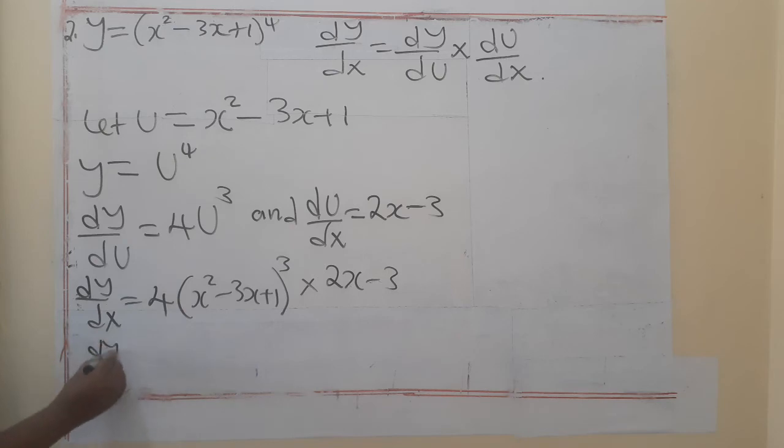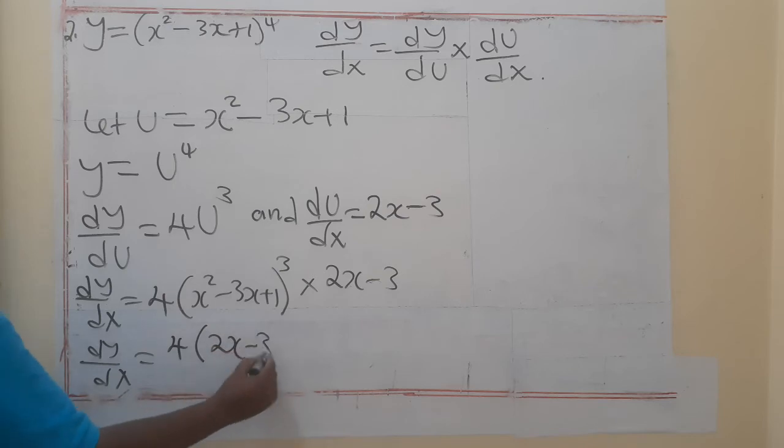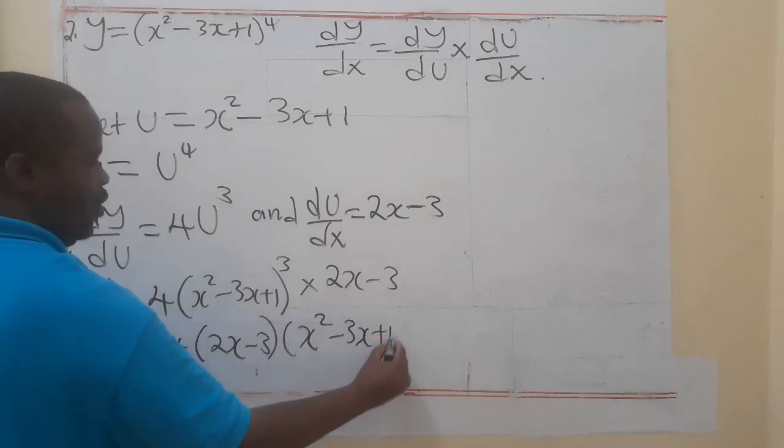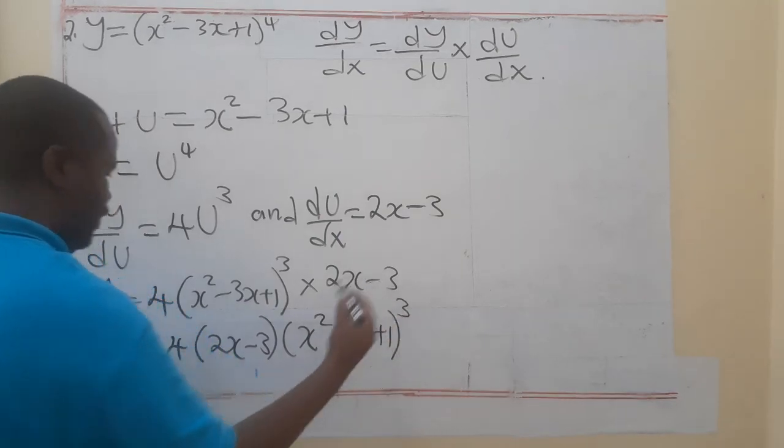Being that dy/dx is equal to, you can multiply this, there's no problem. Or, you can say 4 open bracket 2x minus 3, then you have x squared minus 3x plus 1 to the power 4.